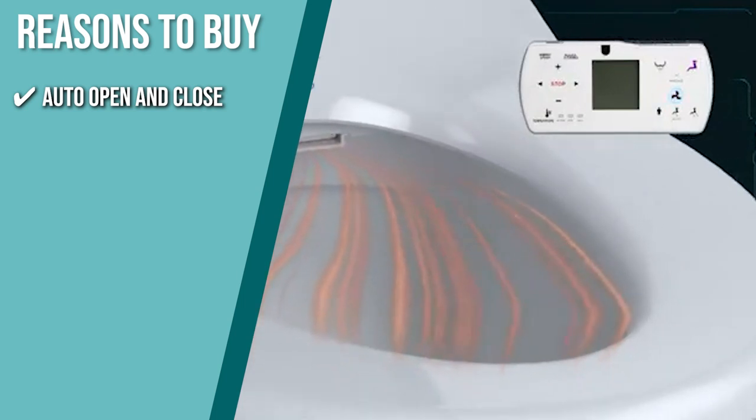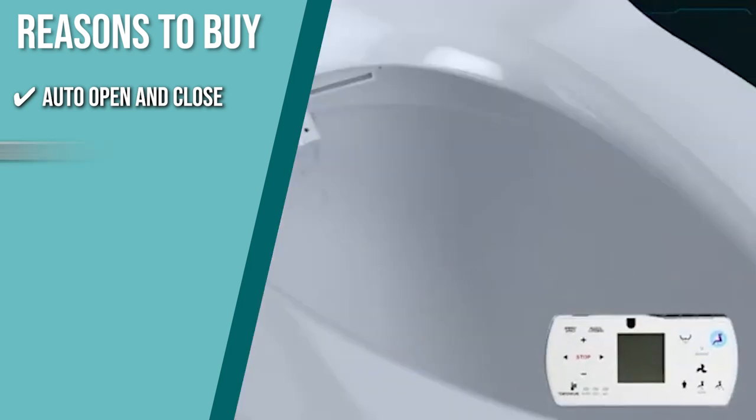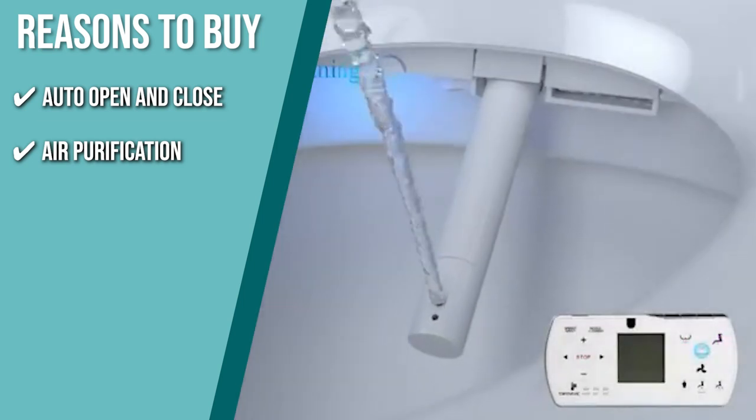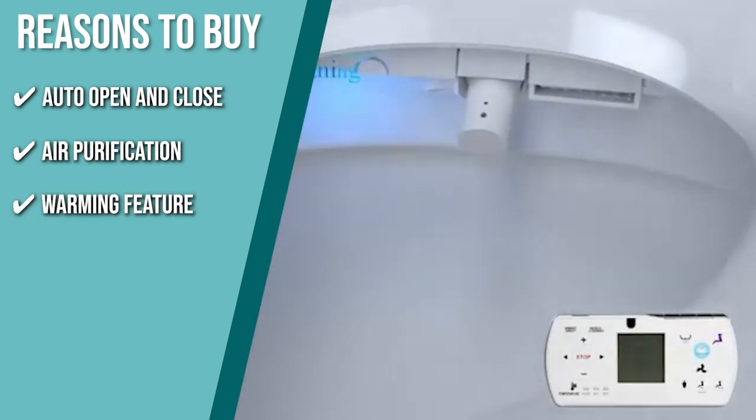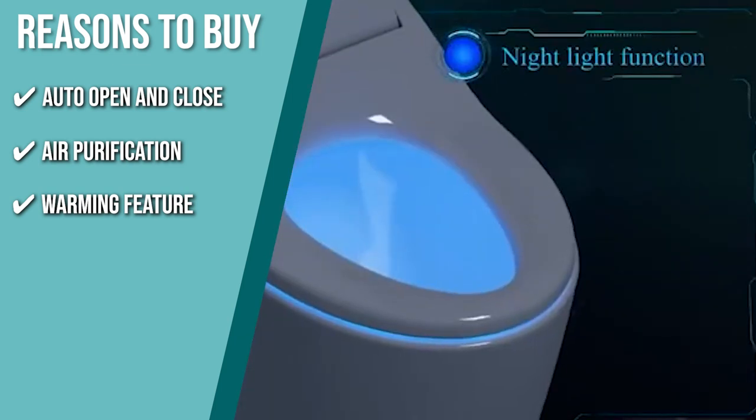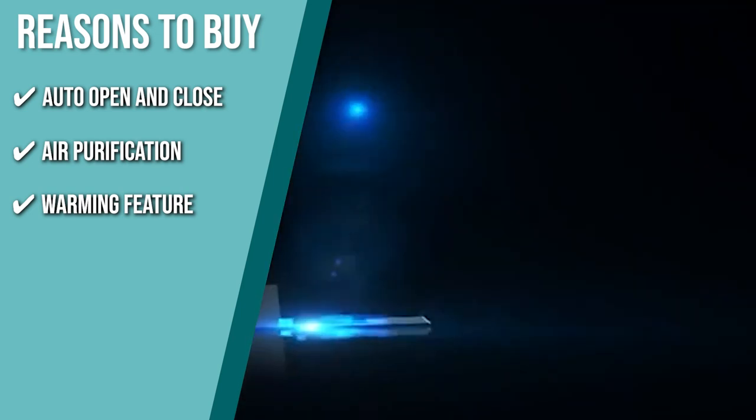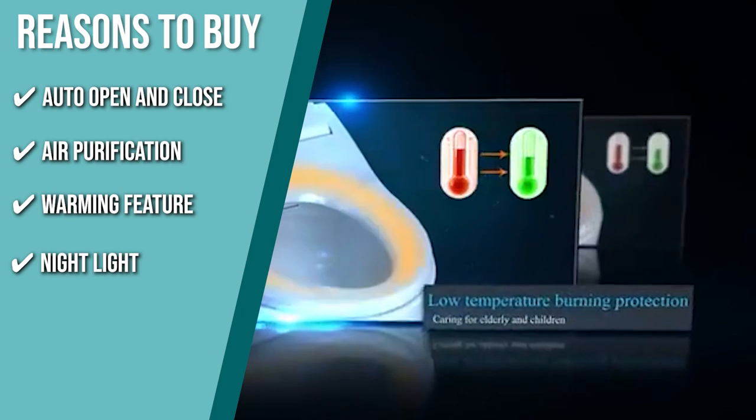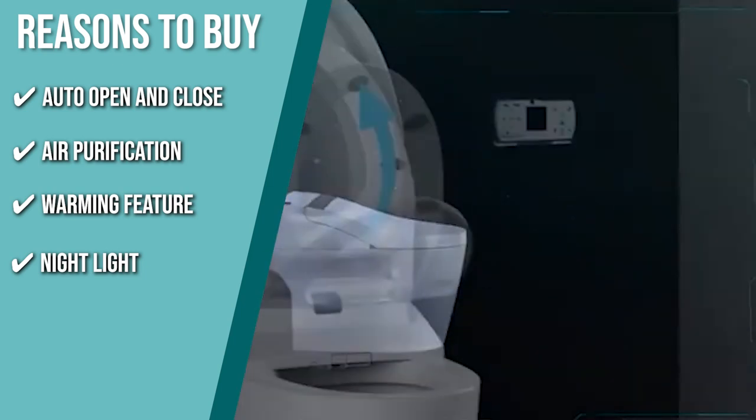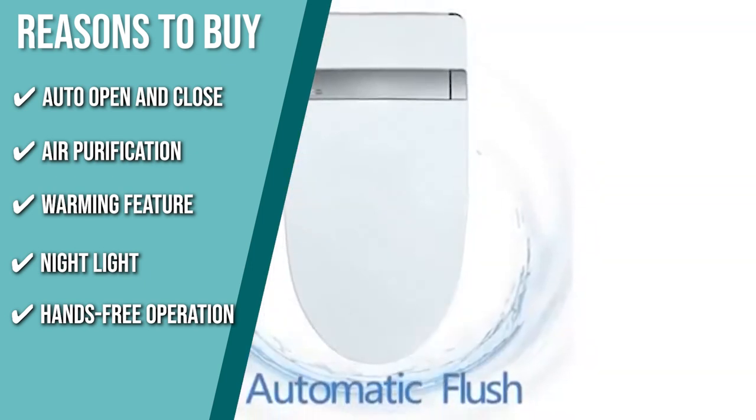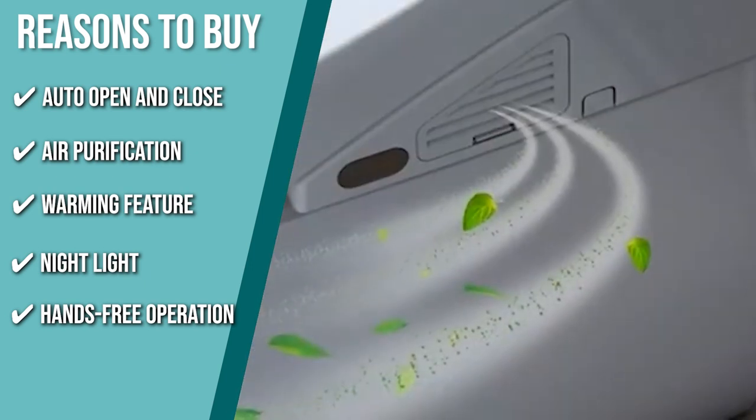Auto Open and Close: The lid automatically opens as you approach the toilet and closes when you are done. Air Purification: Using powerful air filters, it effectively cleans and deodorizes the air around the toilet. Warming feature: This toilet is specially designed with a contoured heated seat and powerful warm air dryer to keep you warm and cozy early in the morning or throughout the winter season. Night Light: You don't have to turn on your lights since the toilet has its own, which helps you navigate at night. Hands-free operation: Its seat will activate the self-cleaning bidet wand, followed by a powerful flush under departure for hands-free operation.